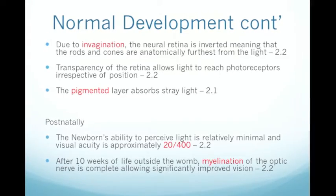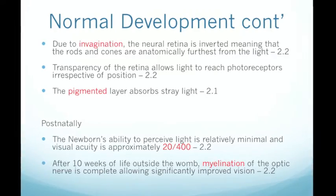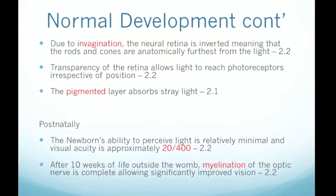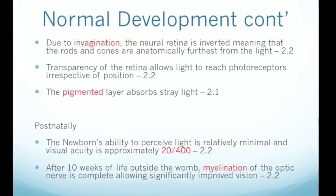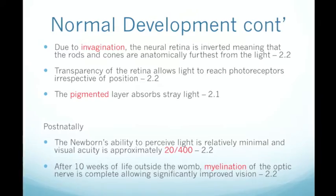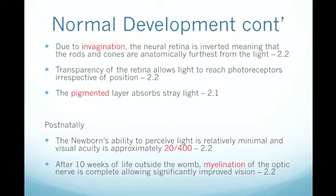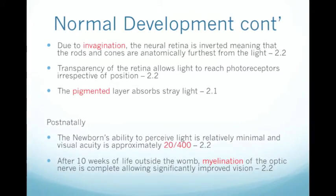Visual acuity is related to clarity. A newborn has approximately 20/400 visual acuity, meaning that at 20 feet from a vision chart, they can see clearly what someone with normal vision can see from 400 feet. After 10 weeks of life outside the womb, myelination of the optic nerve is complete, allowing significantly improved vision. Myelination occurs to increase the velocity of nerve transmission.